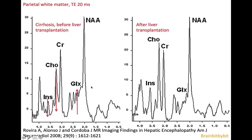The abnormalities also occur in the white matter, usually not visible but detectable on spectroscopy, with increase in glutamine and glutamate and a decrease in choline in this patient with liver cirrhosis. The spectroscopy normalized after liver transplantation.